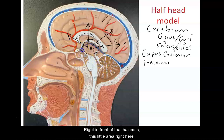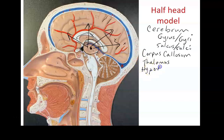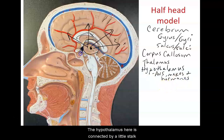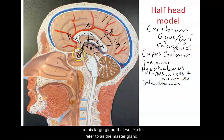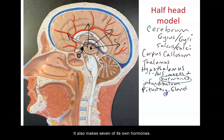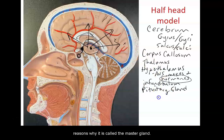Right in front of and below the thalamus is the hypothalamus, which helps us with many autonomic functions and also makes two hormones we'll learn about with the endocrine system. The hypothalamus is connected by a little stalk called the infundibulum to the pituitary gland, which we like to refer to as the master gland. The pituitary stores and releases hormones and makes seven of its own, many of which regulate hormone release from other structures — which is why it's called the master gland.